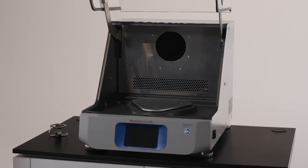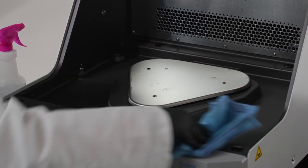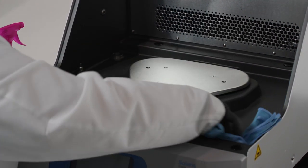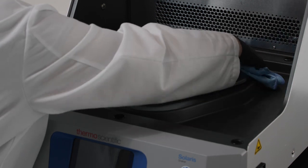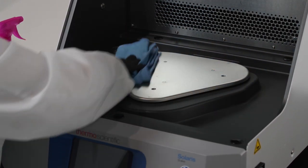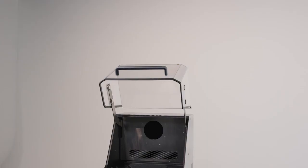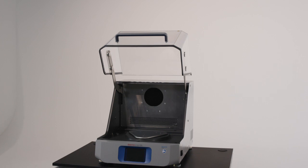The shaker and platform were designed with rounded corners to make the cleaning process easier. We recommend cleaning the shaker platform and surface with a mild soap and water. A 70% ethanol solution can be used to wipe down and disinfect surfaces as well. Please allow the shaker to air dry with the hood open.